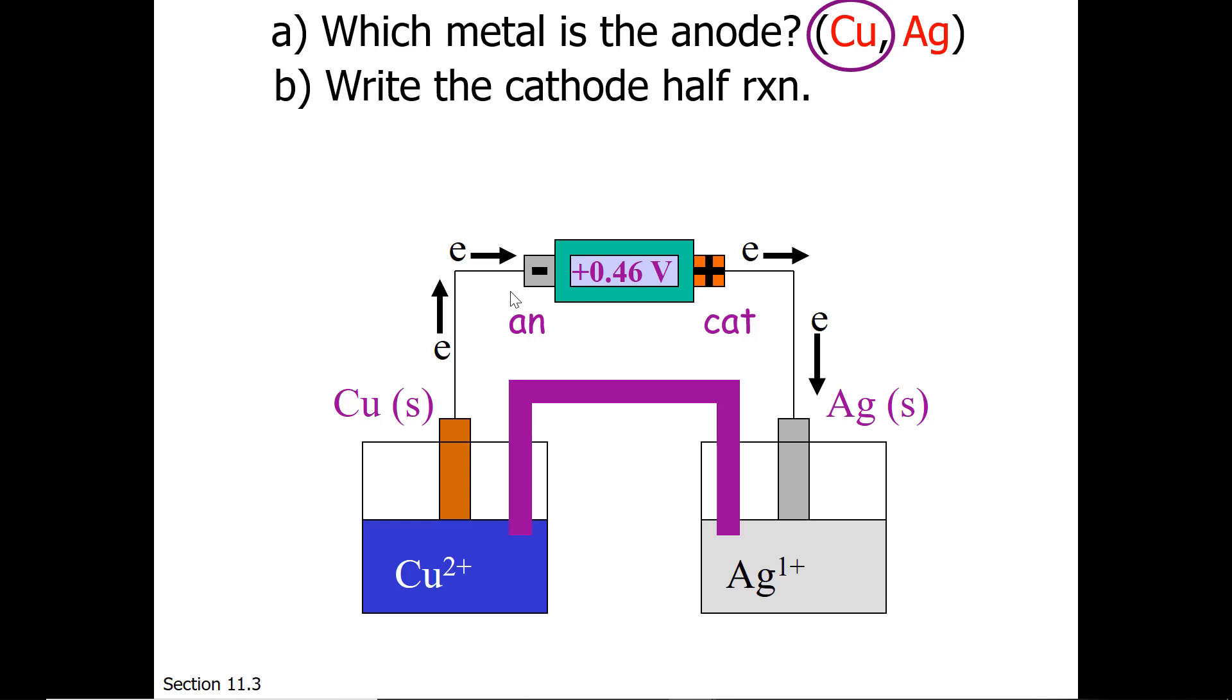Our next question is, write the cathode half reaction. Well, clearly this has to do with the silver. What happens at the cathode? Is it oxidation or reduction? So is it silver to silver 1+, or is it silver 1+ to silver? Well, I hope you say that reduction occurs at the cathode. That means the oxidation state goes down. So we are going from silver 1+ and adding one electron to go to silver, and this is a reduction.